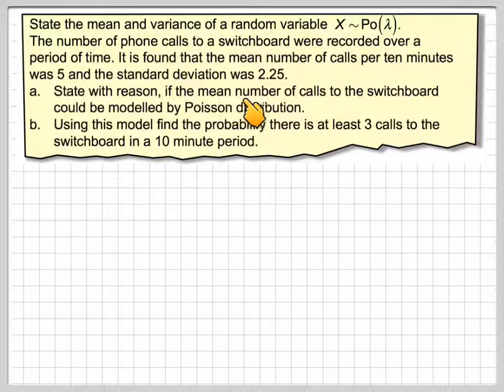State with reason if the mean number of calls to the switchboard could be modeled by a Poisson distribution. Using this model find the probability that there are at least three calls to the switchboard in a 10 minute period.